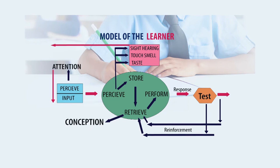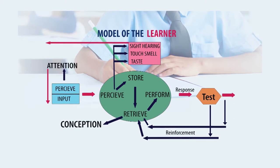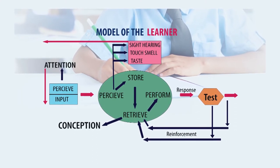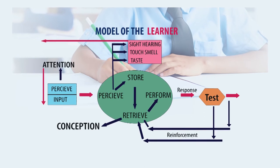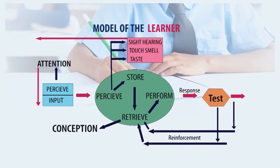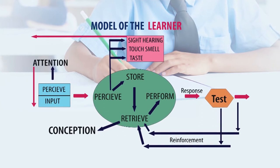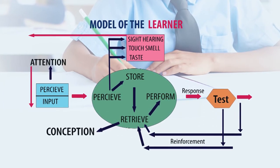Before discussing the operations of the interactive phase, let me explain how a learner learns. In this model of the learner, we see how stimulus is provided based on sight, hearing, touch, smell and taste; how the learner stores information, how he performs, how he gets reinforcement, and how he conceptualizes ideas. Once we understand how the learner learns, it becomes much easier for us to handle the interactive phase.